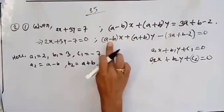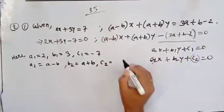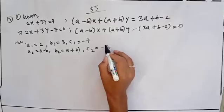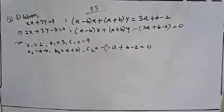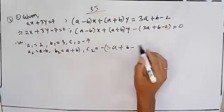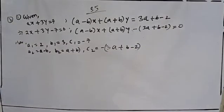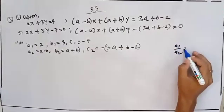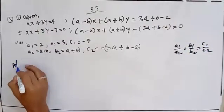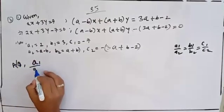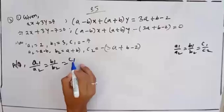So C1 equals minus 7 and C2 equals minus 3a plus b minus 2. According to the condition: A1 by A2 equal to B1 by B2 equal to C1 by C2.